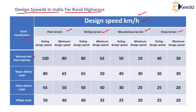For national highway and state highway, in the case of plain terrain, the rolling design speed is equal to 100 kilometers per hour and minimum design speed is equal to 80 kilometers per hour. Similarly, we can determine the rolling design speed and minimum design speed for rolling terrain, mountainous terrain, and steep terrain from their respective columns.